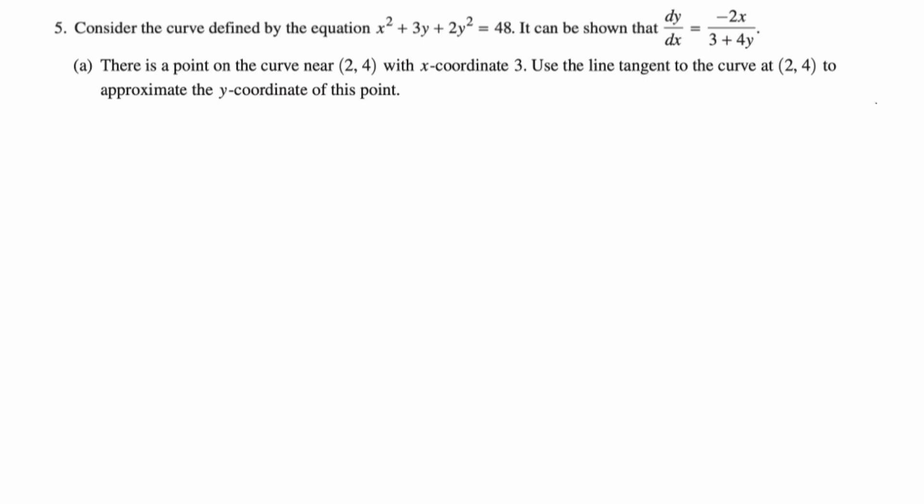There is a point on the curve near (2, 4) with x-coordinate 3. Use the line tangent to the curve at (2, 4) to approximate the y-coordinate of this point. This is kind of an interesting take on a tangent line question. We're just doing a tangent line. So we're going to find dy/dx at the point (2, 4). And so you're just plugging in. So it's going to be negative 2 times 2 over 3 plus 4 times 4. So that's negative 4 over 19.